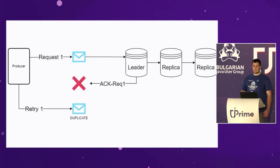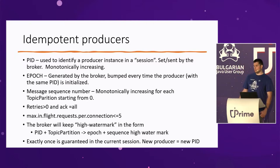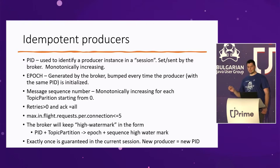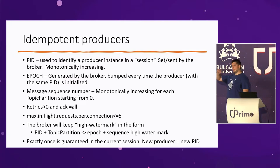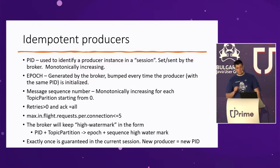The idempotent producer allows us to enable exactly-once delivery semantics, and it's just a matter of configuration. When you instantiate an idempotent producer, you ask the broker to give you a PID — which stands for producer ID. This happens in an init request to the broker when you initialize the idempotent producer. It also gives you an epoch, which I'll talk about a bit later.